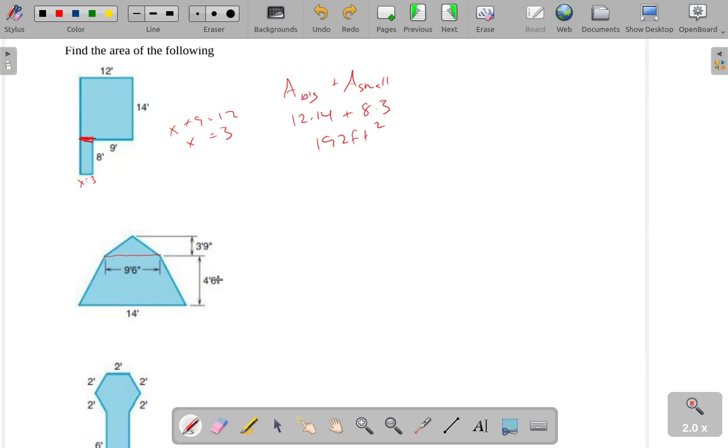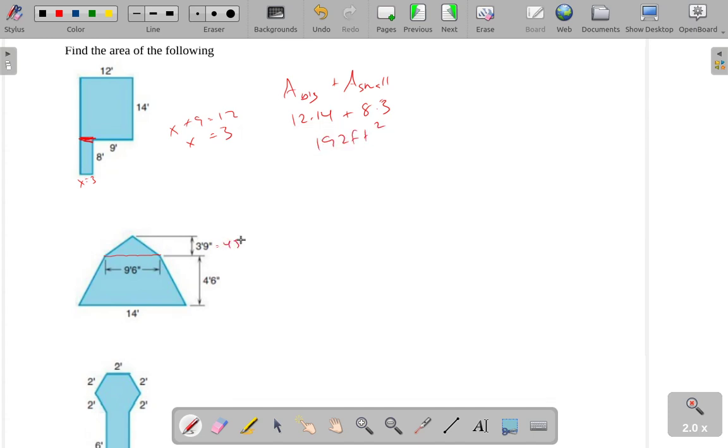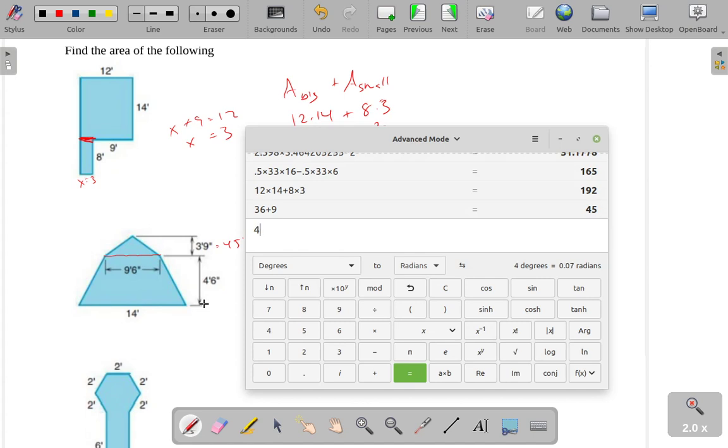But rather than dealing with feet and inches like this, I'm going to convert everything to inches just to make my life easier. 3 feet is 36 inches, so 36 plus 9 is 45 inches. That's 45 inches there. 4 feet 6 inches, the other height, this one right here, 4 times 12 plus 6 gives me 54 inches.